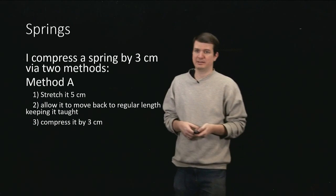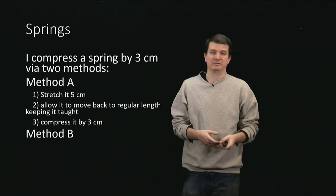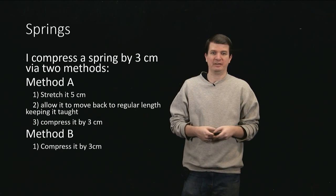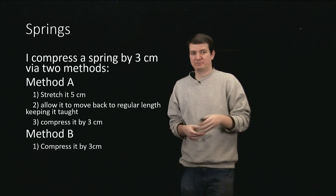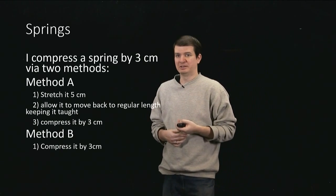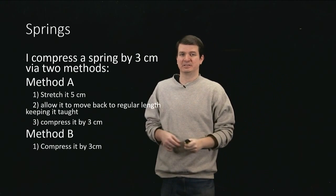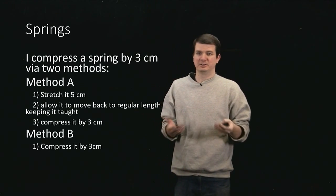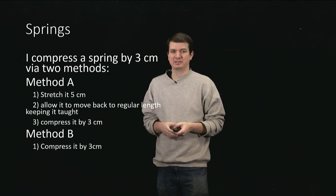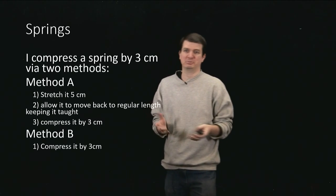And then the other method is going to be the obvious direct approach, which is I'm starting at the normal length and I'll just compress it by three centimeters. So the first step of method B is exactly the same as the last step of method A. But method A has this extra business of stretching and then allowing to return to normal length. So the question is, does that extra step change the work that I have to do to compress the spring?